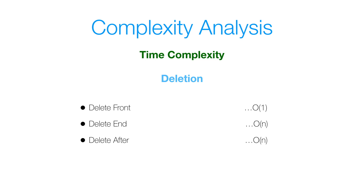For the time complexity for deletion: deleting the node at the front of the list is O(1) — constant time — because we simply set last.next to front.next. However, deleting the node at the end requires traversing the entire list to find the previous node and then updating last, making it an O(n) linear time operation. Similarly, deleting after a given node also requires traversing the entire list in the worst case, so it's also O(n).